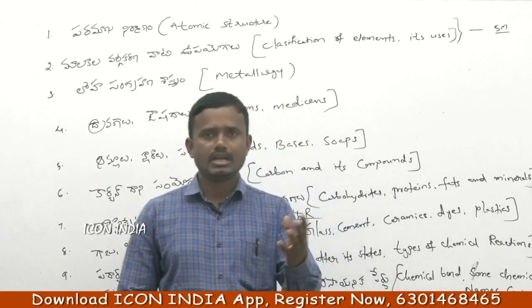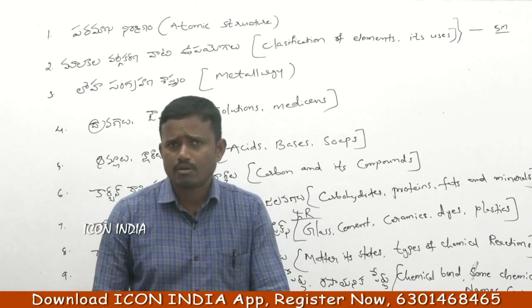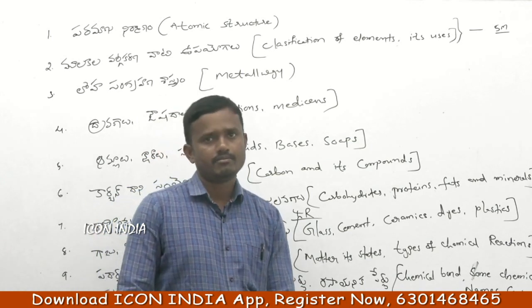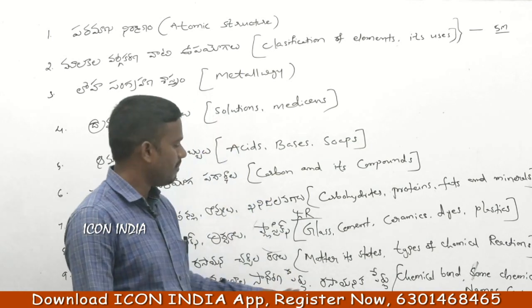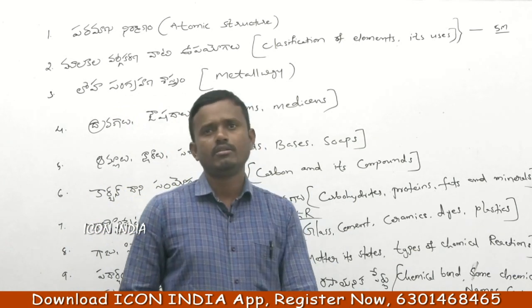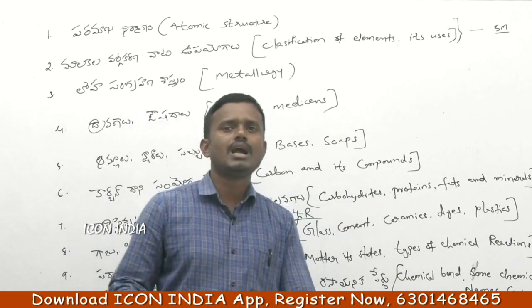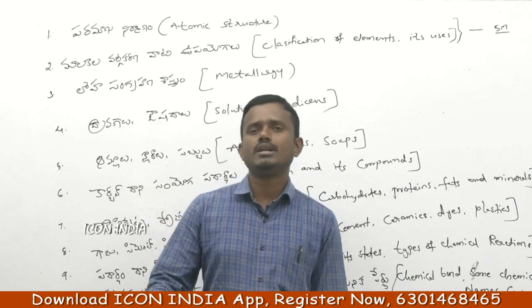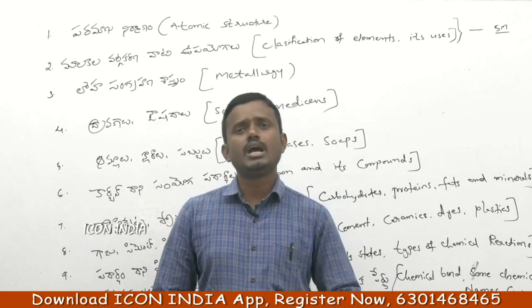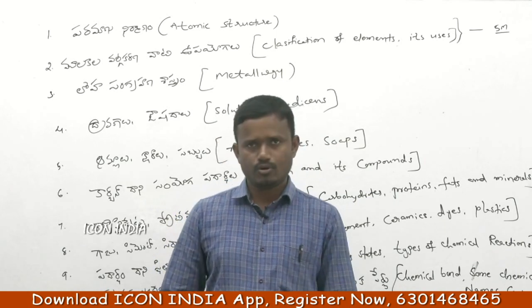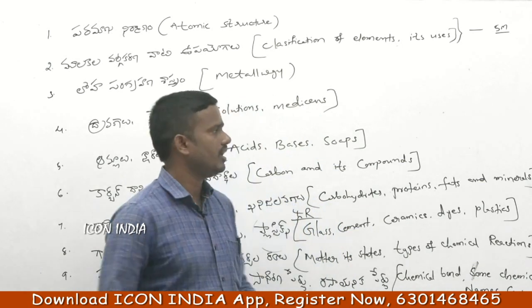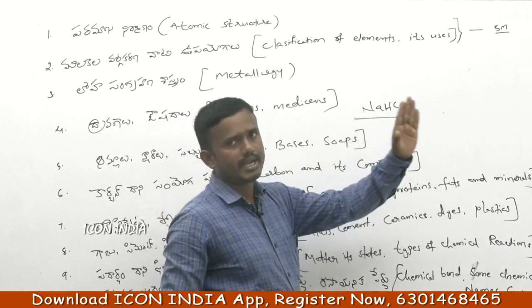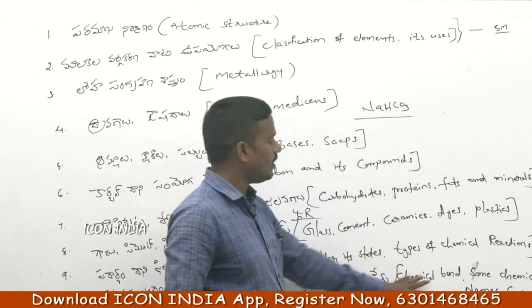For chemical names versus common names: diamond's chemical name is carbon. Salt's chemical name is sodium chloride. Bleaching powder is calcium hypochlorite (CaOCl2). Baking soda is sodium bicarbonate (NaHCO3).